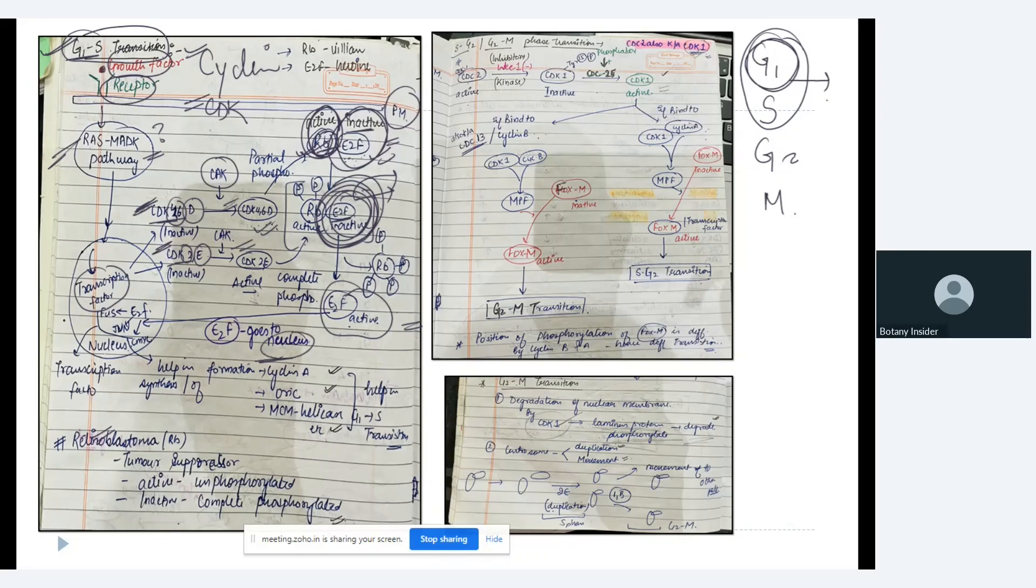In the nucleus it again phosphorylates or it again activates few other transcription factors like FUS, JNU and CMYC. Now because of all these transcription factors, all this helps in the formation of cyclin A, ORC and MCM helicase. And if you all remember, these are the things that are required or that are actually required for the G1 to S transition.